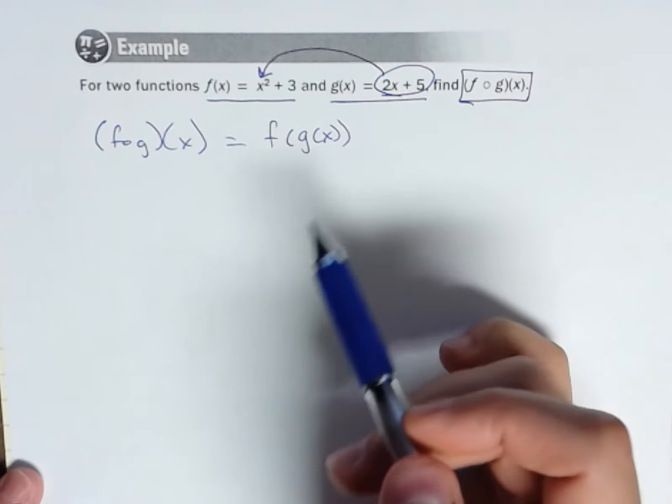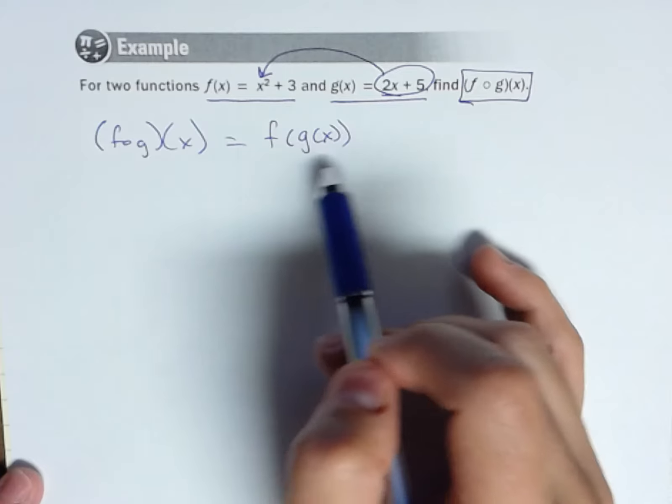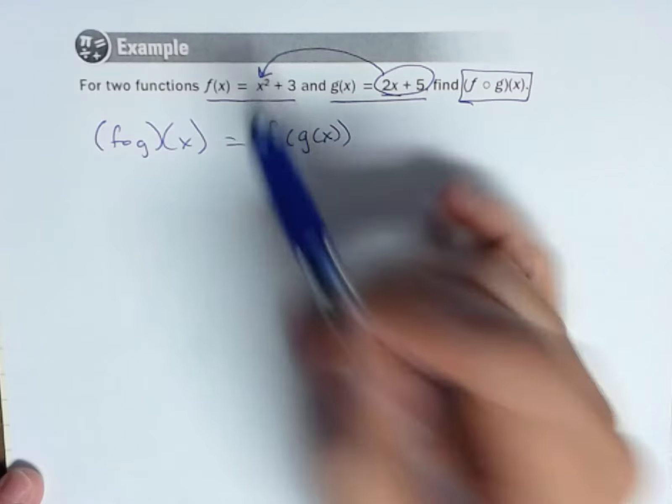So again, if I did something like f of 2, well, you just put a 2 in here. Well, I'm doing f of g of x, so I'm going to take this whole function and substitute it in.